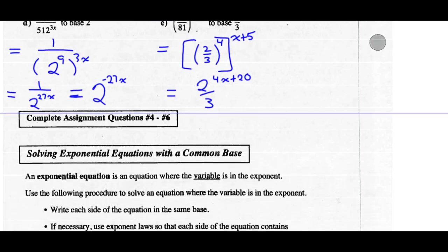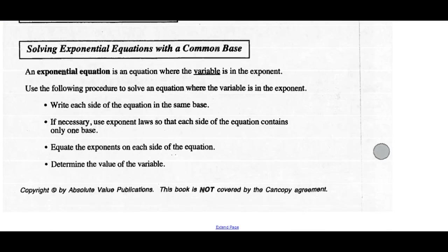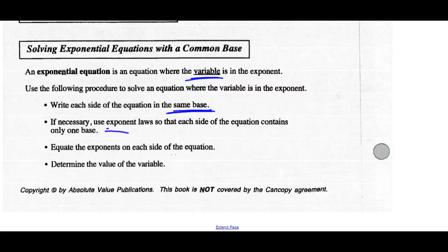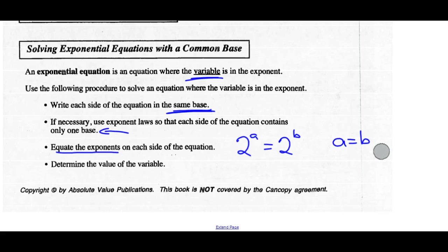We have to be able to do that in order to solve equations that have exponents that are variables. To solve an equation where the variable is an exponent, use the following procedure: write each side of the equation with the same base — that's the changing the base technique we just learned. If necessary, use our exponent laws to change the base. Once you've done that, equate the exponents. If I work everything out and get 2 to the a equals 2 to the b, and my bases are the same on each side, then the exponents must be equal, so a equals b. Once I've equated the exponents, I should be able to solve the equation and determine the value for the variable.